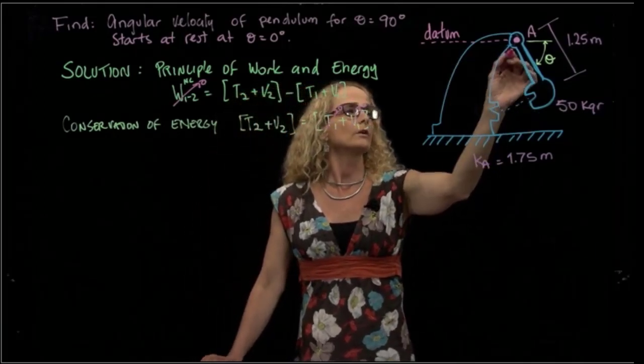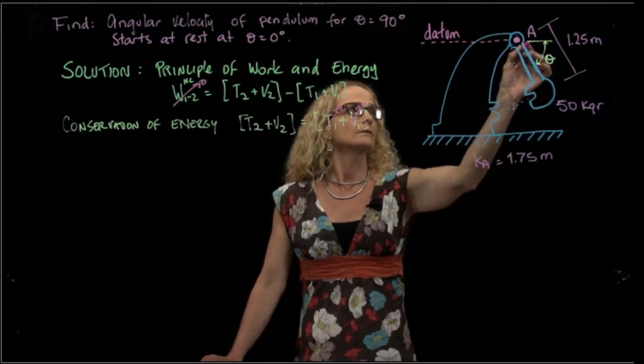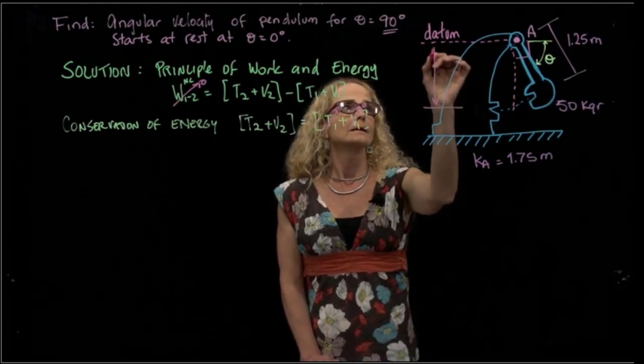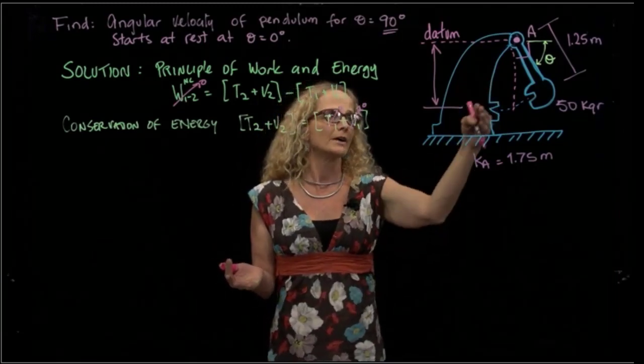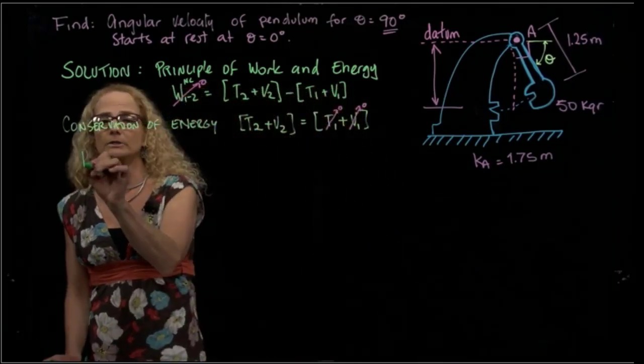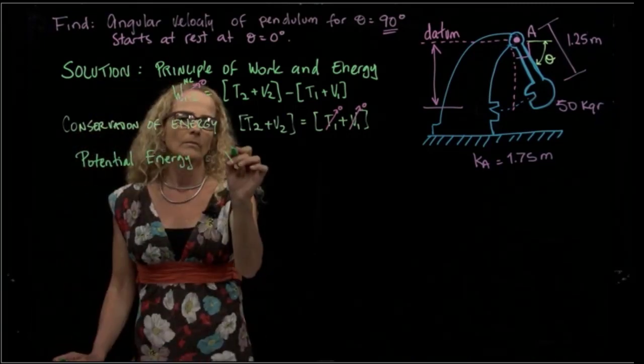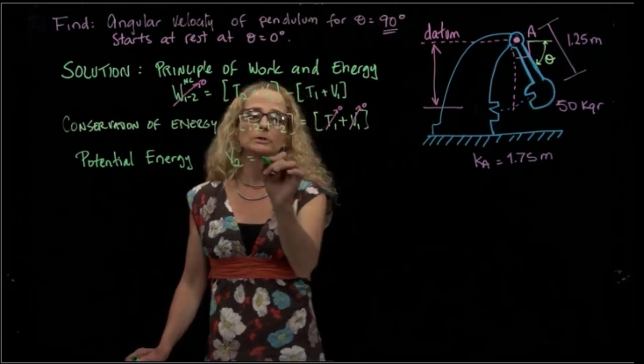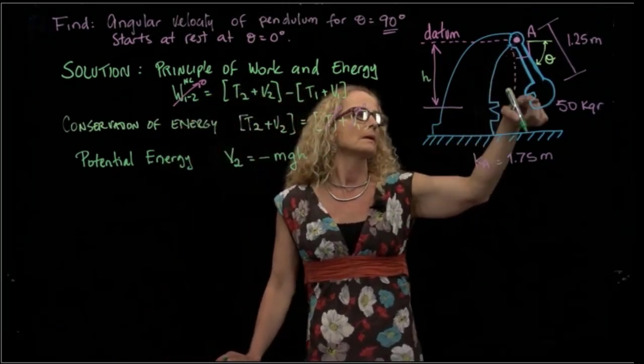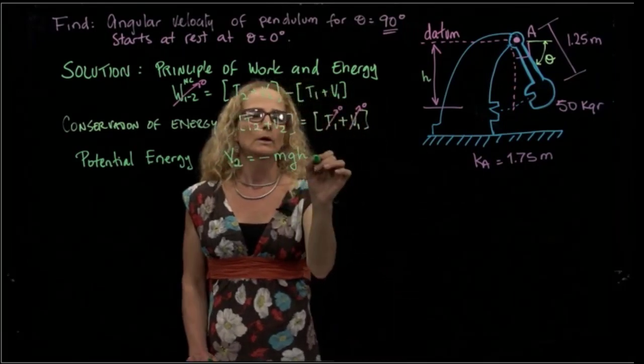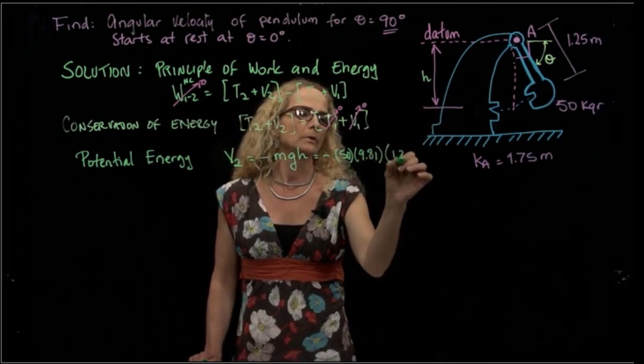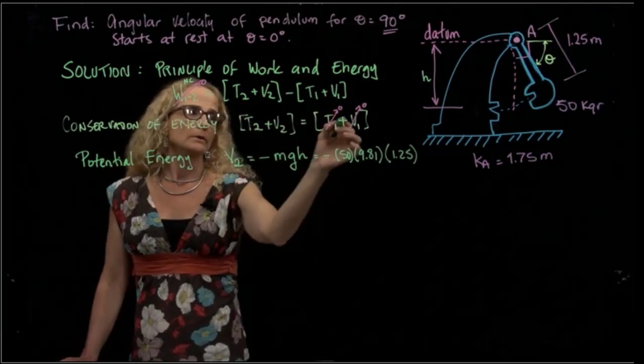And then we will have for the second position, which is at 90 degrees, which is where we are being asked to calculate the velocity, we have to calculate this distance to be able to calculate how much we have lost in potential energy. So the potential energy, the loss of potential energy, is mass times gravity times that height. That height is actually the same as the length of that pendulum. So that will be negative 50 times gravity times 1.25. And V1, we already said, is zero.